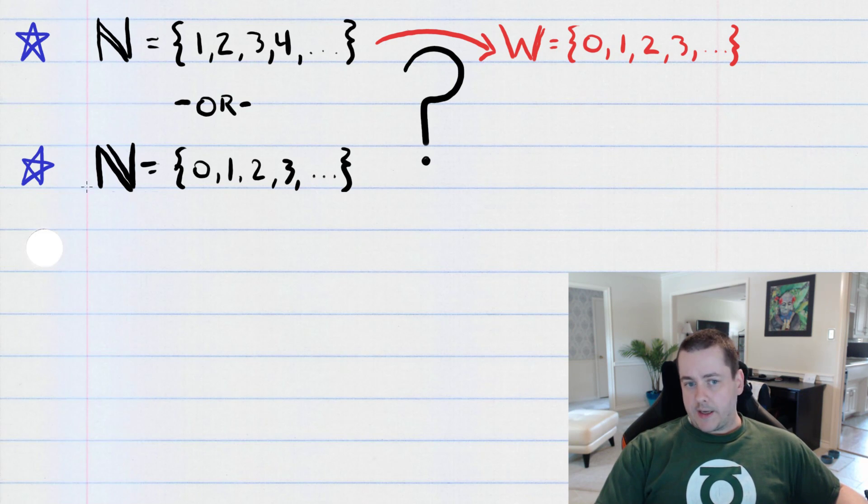If you are used to the second definition for the set of natural numbers, then there's obviously no need to define the set of whole numbers because it's just redundant. It's the same thing.